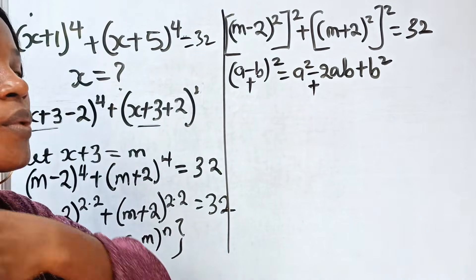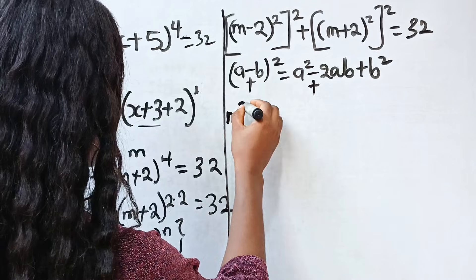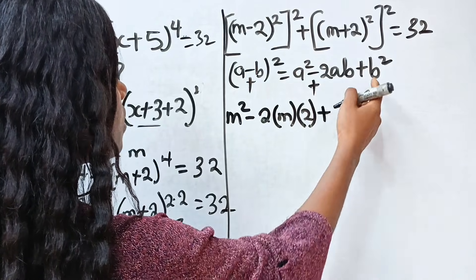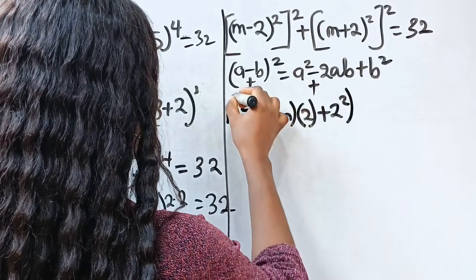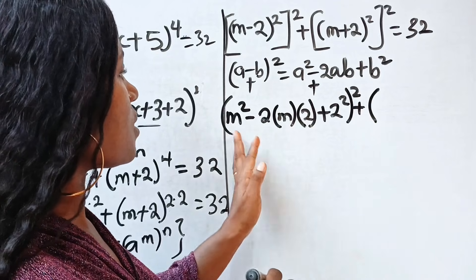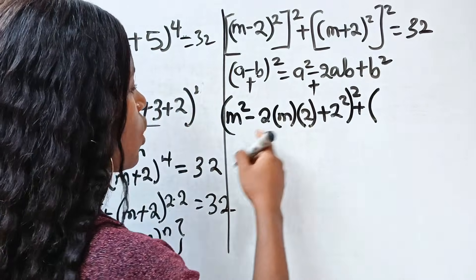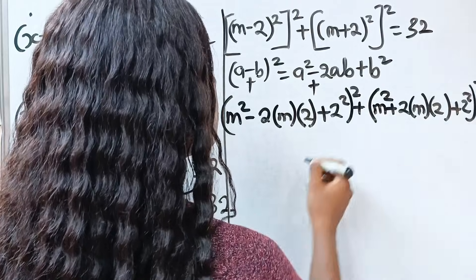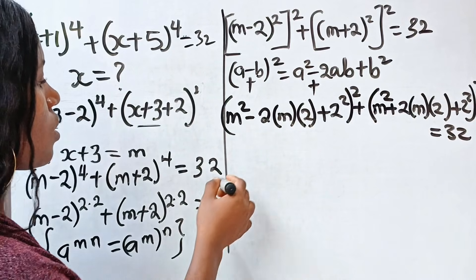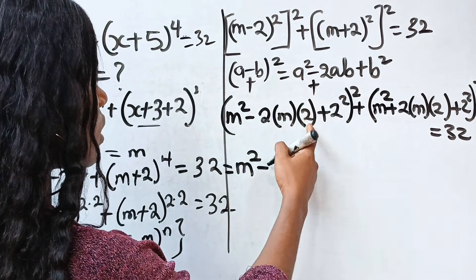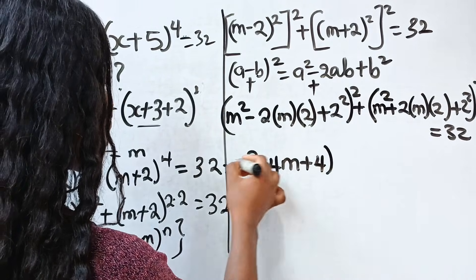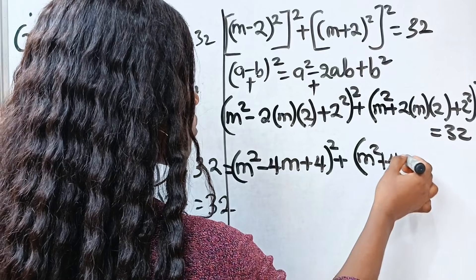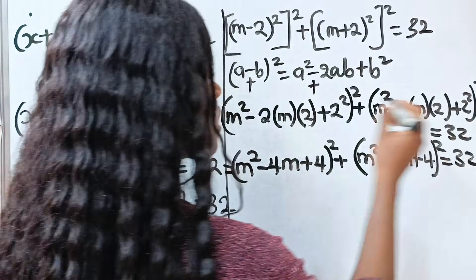Looking at that, we can write (m minus 2) squared as m squared minus 2 times m times 2 plus 2 squared, all squared, plus m squared plus 2 times m times 2 plus 2 squared, all squared, equal to 32. This simplifies to (m squared minus 4m plus 4) all squared plus (m squared plus 4m plus 4) all squared equals 32.